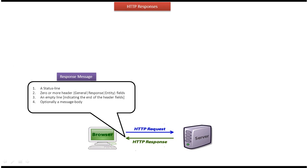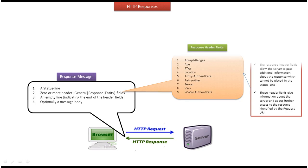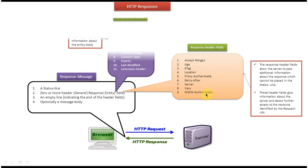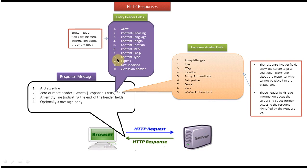Now we will see detailed information about the header fields. As mentioned, there are three header fields: the first one is the general header field, the second one is the response header fields, and the third one is the entity header fields. The response header fields allow the server to send additional information about the response and about the server itself to the client.